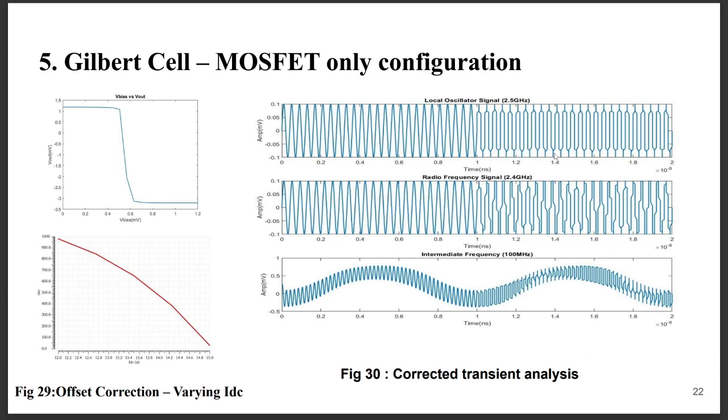Next we have decided to do two analysis: varying biasing voltage with output voltage and varying the current source.